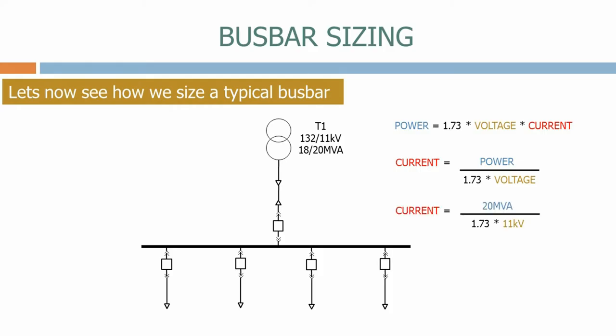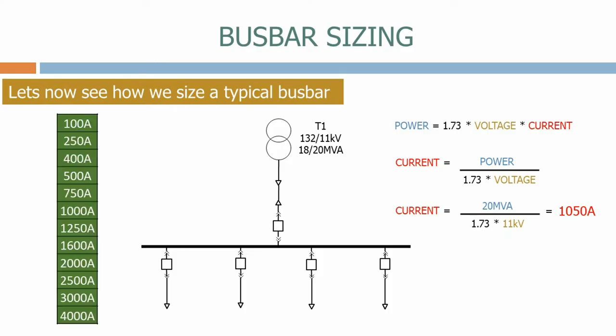For transformer T1, the current equals the maximum rating of 20 MVA, divided by root 3 times its maximum voltage, which is 11 kV. The maximum current is 1050 amps, which is the peak current that will flow through the busbar. The busbar manufacturers make them in standard ratings. Looking down the table, the busbar we should choose for this application is 1250 amps.